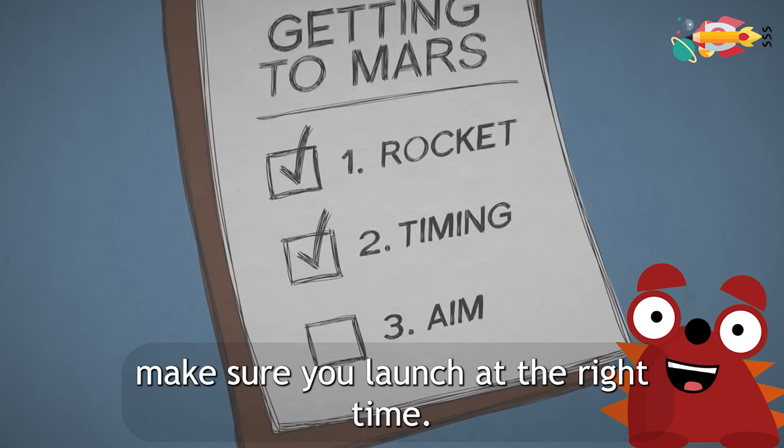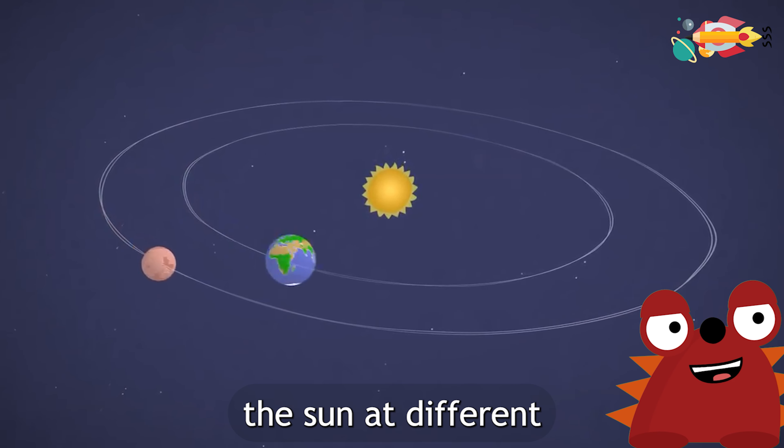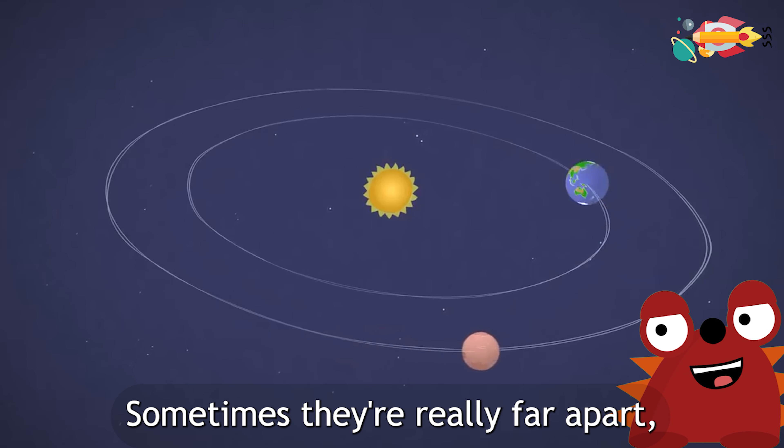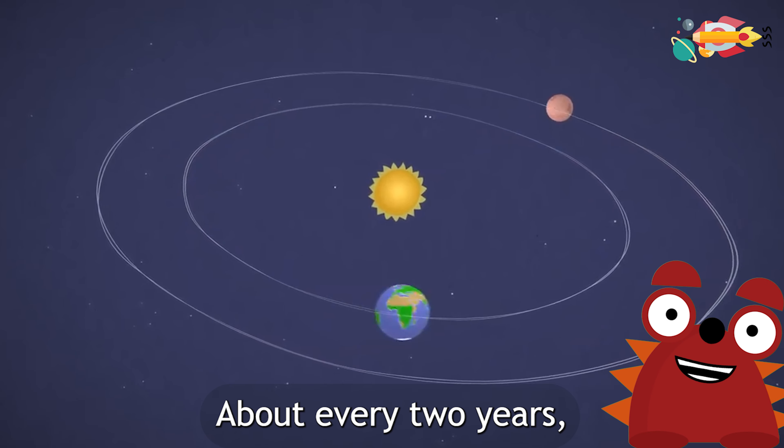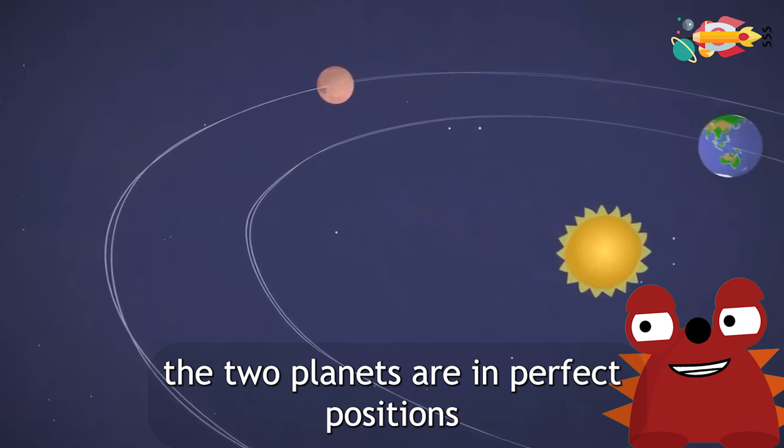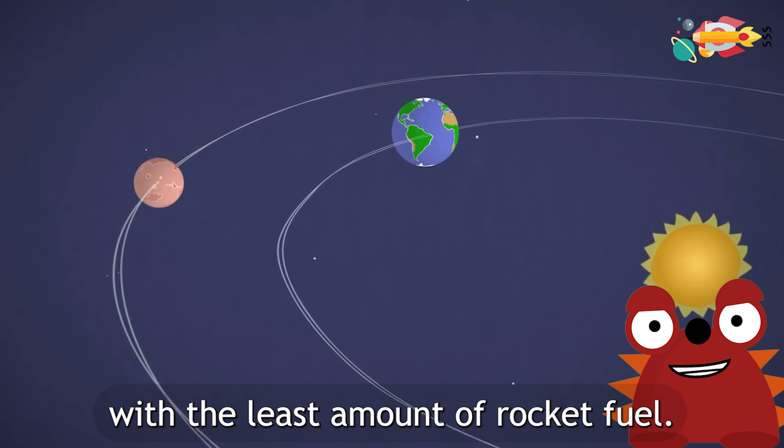Next, make sure you launch at the right time. Mars and Earth orbit the Sun at different speeds and distances. Sometimes they're really far apart, and other times they come closer together. About every two years, the two planets are in perfect positions to get to Mars with the least amount of rocket fuel.